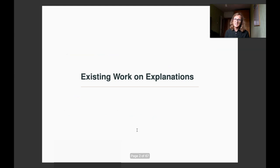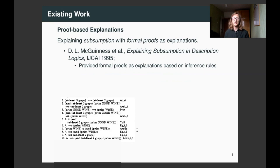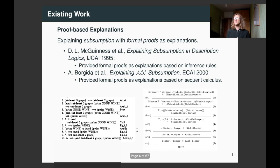I would like to start by reviewing some of the existing work. So, earliest work concentrated on explaining the consequences of the T-box, the so-called ontology. And in particular, it has focused on explaining subsumption with formal proofs as explanations. Given some inference rules and the T-box, we provide a proof how this subsumption follows. And over time, different inference rules based on different logic calculus have been proposed with different benefits.